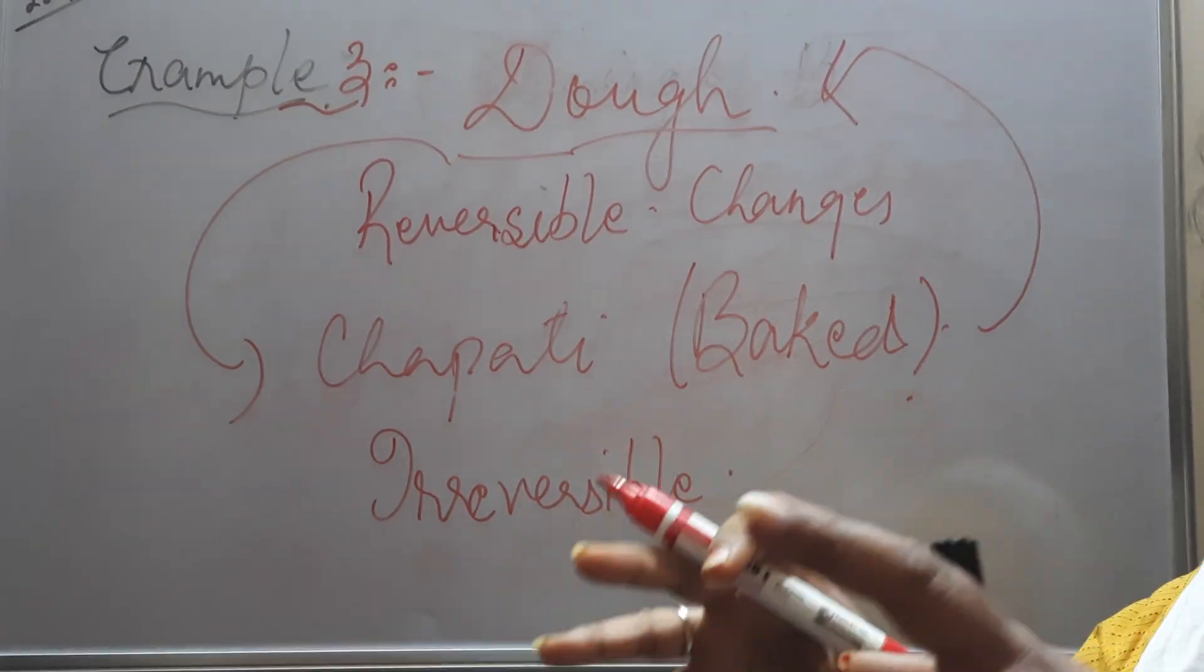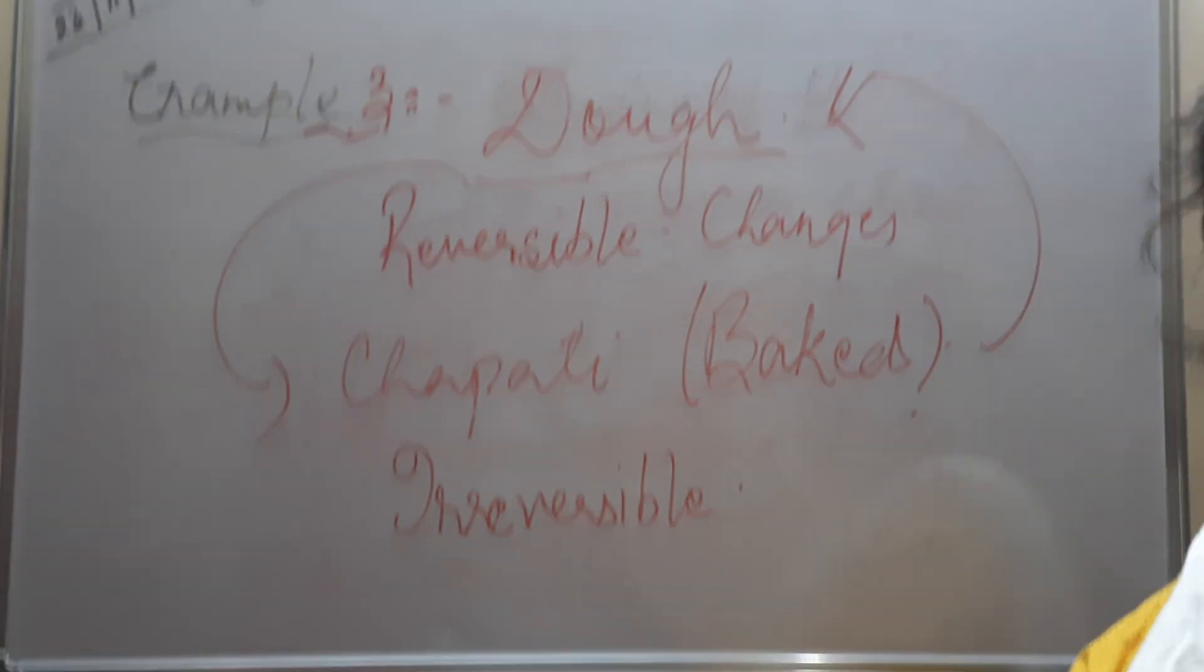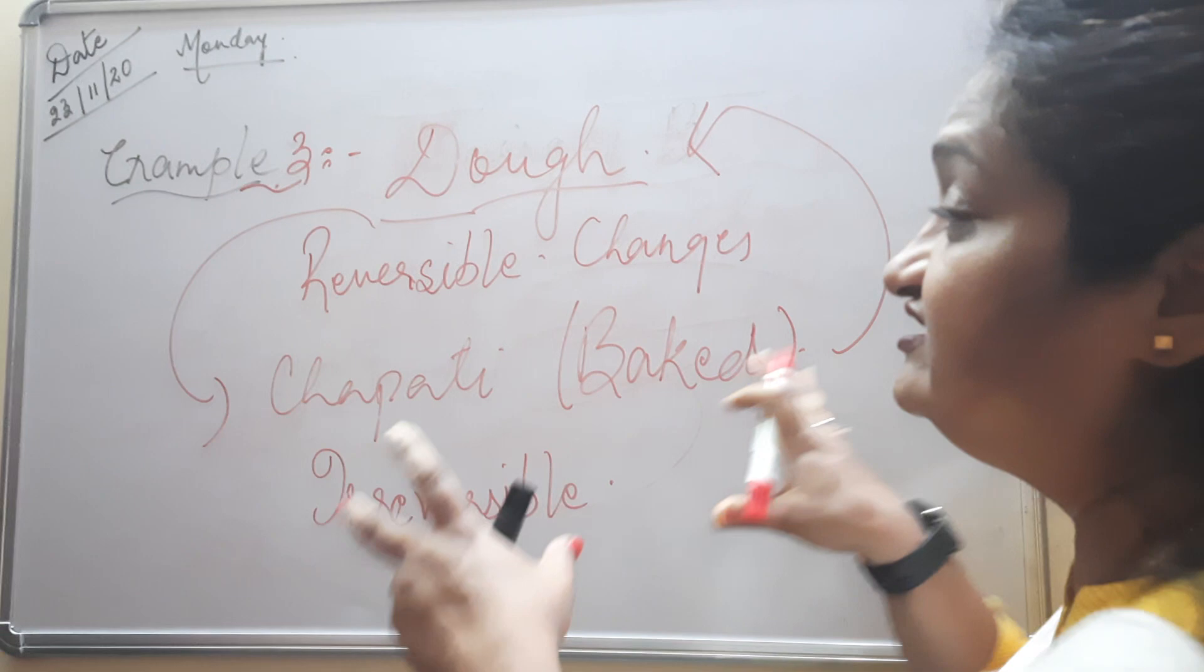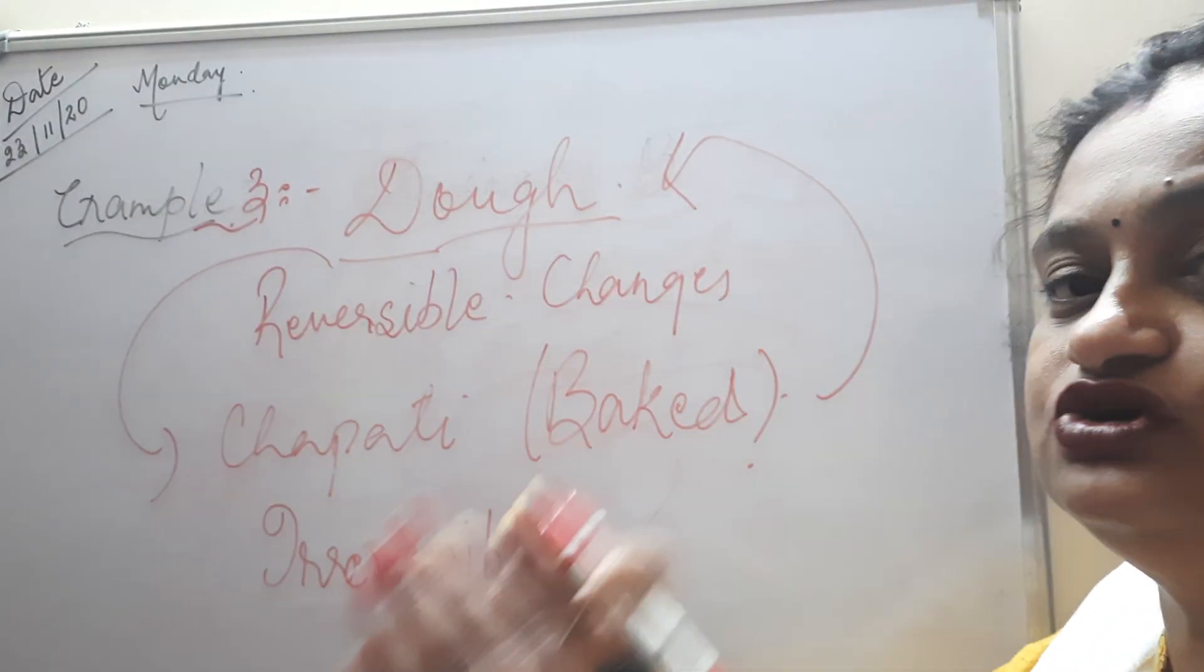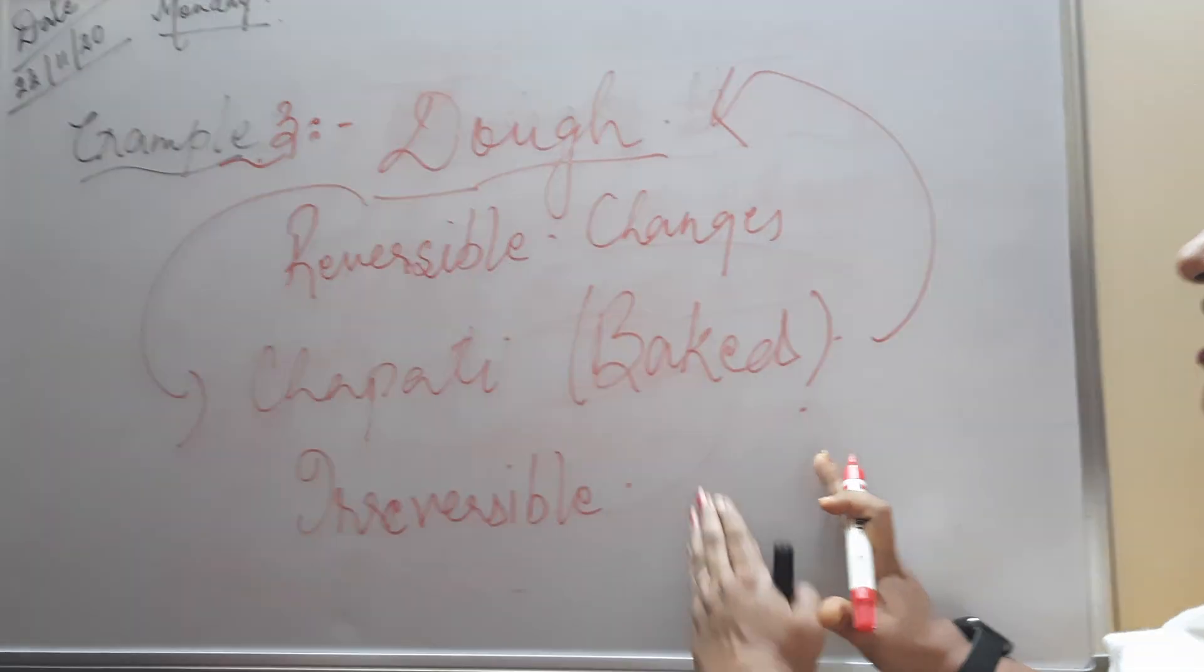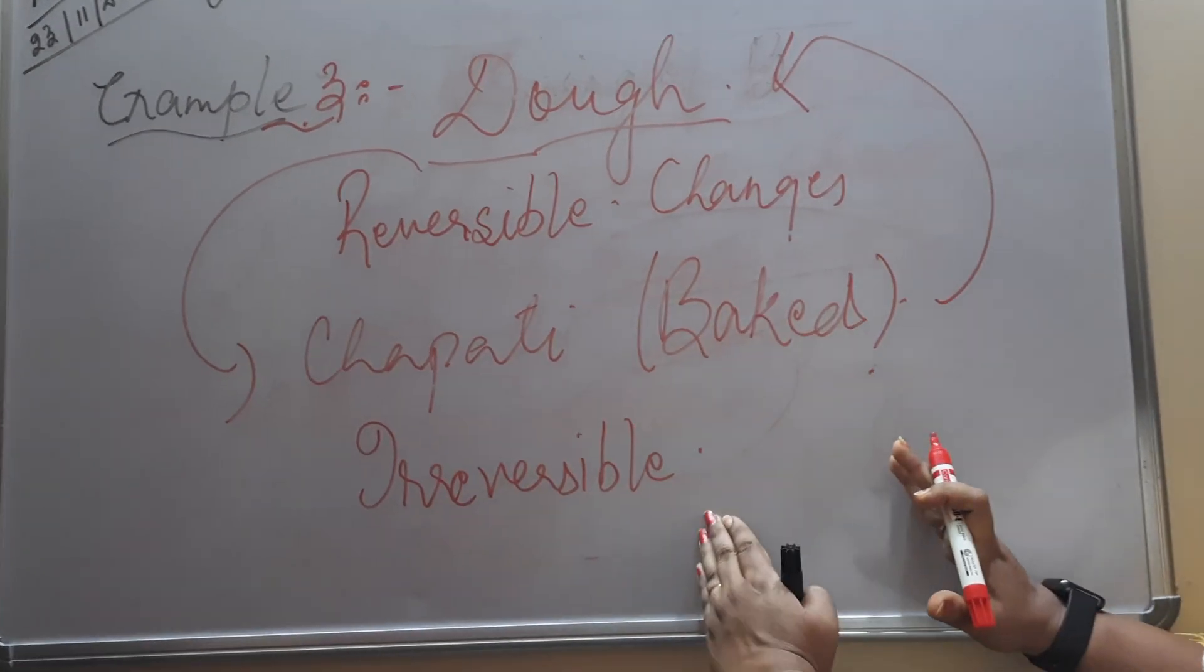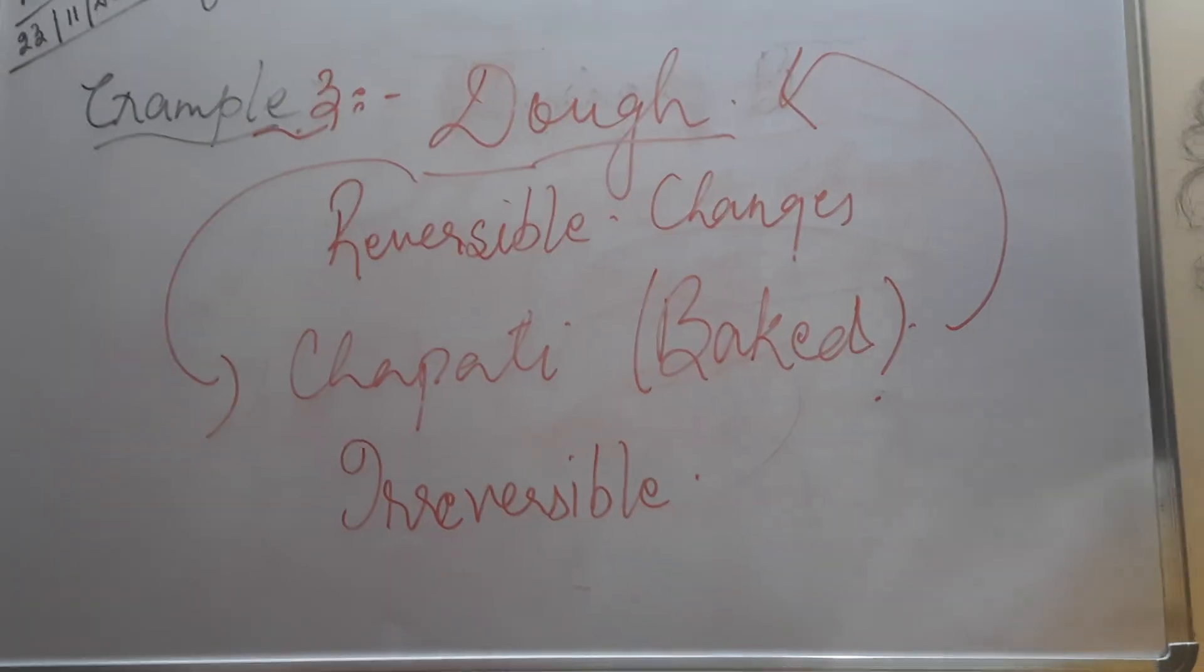Question yehaan arise ho sakta hai. Ma'am, paper cutting ke baad, paper ka koi naya property nahi aya hai. Baloon burst honne ke baad, koi naya property nahi aya hai. Sif chapati mein aya hai. A baked chapati. That is why we don't use the word physical and chemical yehaan pe. We only say reversible and irreversible. One, you can get back to its original shape. One, you cannot get back to its original shape and size. Thank you children.